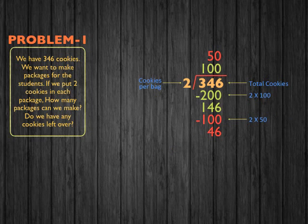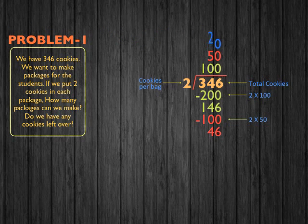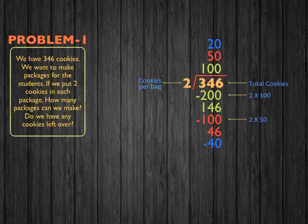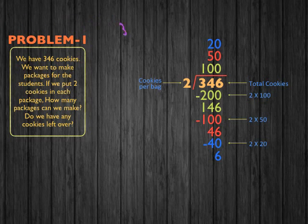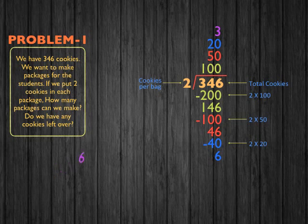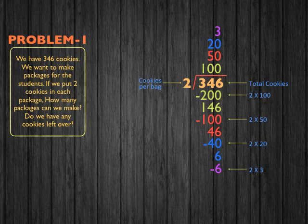Now how many cookies can go into 46? Well, 20. 20 times 2 equals 40. So 46 minus 40 equals 6 cookies. How many packages can we make from 6? That's 3. Because 3 times 2 equals 6.